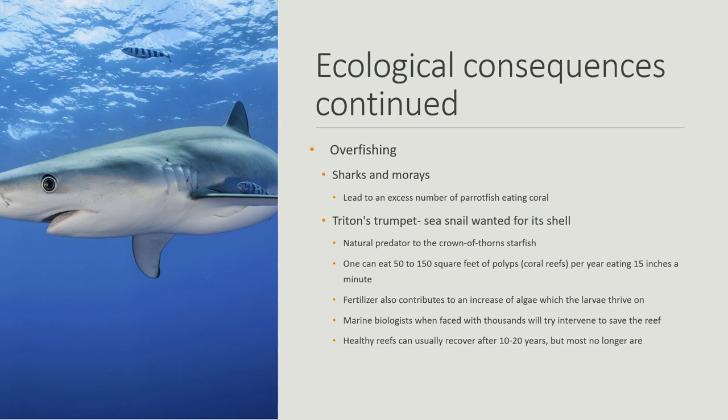Overfishing is another ecological consequence. The overfishing of sharks and rays leads to an excess number of parrotfish, which eat and destroy coral. The Triton's Trumpet seashell is collected by tourists, yet it is a natural predator to the crown-of-thorns starfish, which can eat 50 to 150 square feet of coral reef polyps per year, eating 15 inches per minute. Fertilizer also contributes to an increase of algae, which the larvae of this starfish thrive on. Marine biologists, when faced with thousands of these starfish, will try to intervene to protect the reef. Healthy reefs can usually recover from an infestation after 10 to 20 years, but most reefs are no longer healthy.